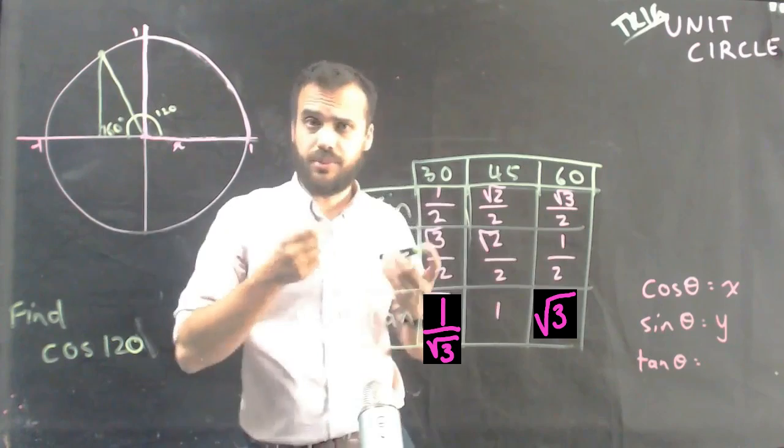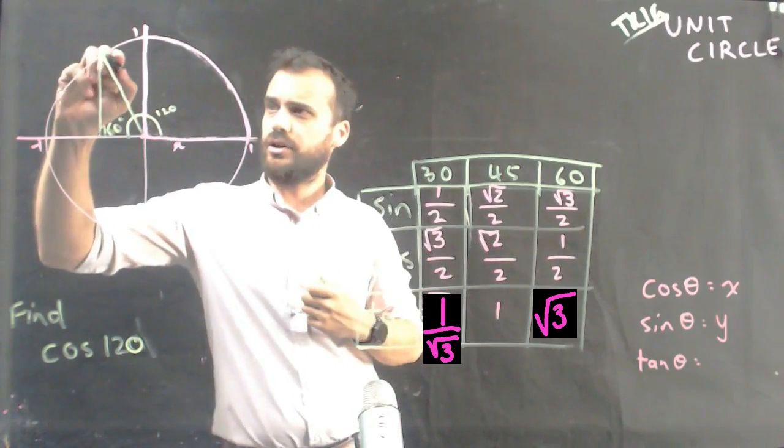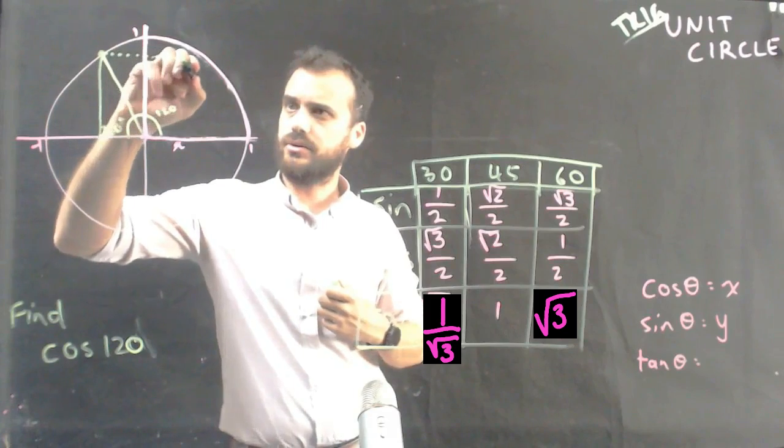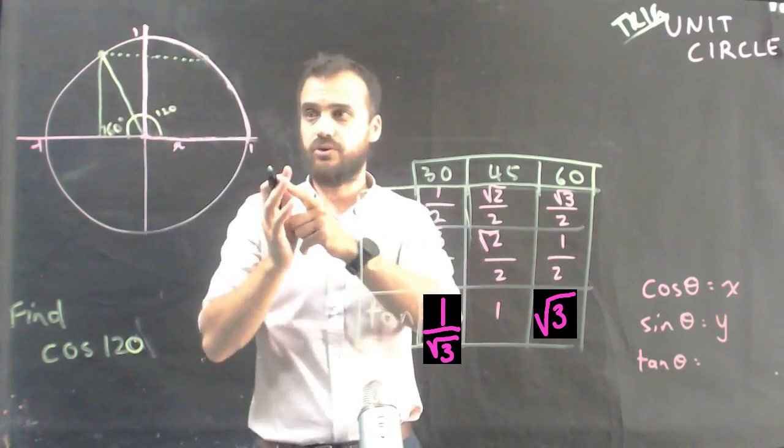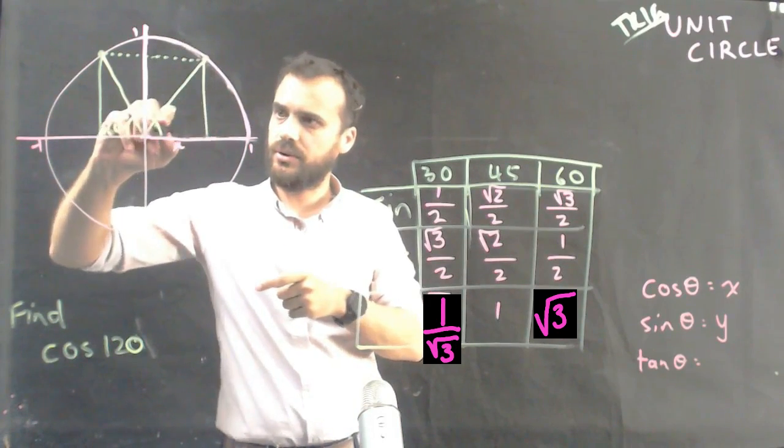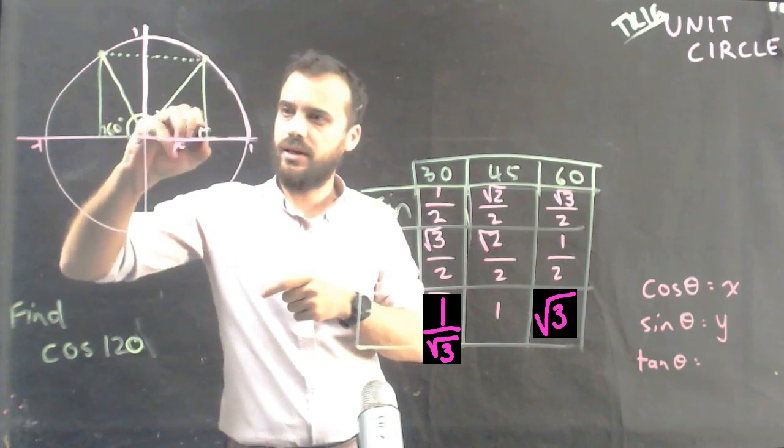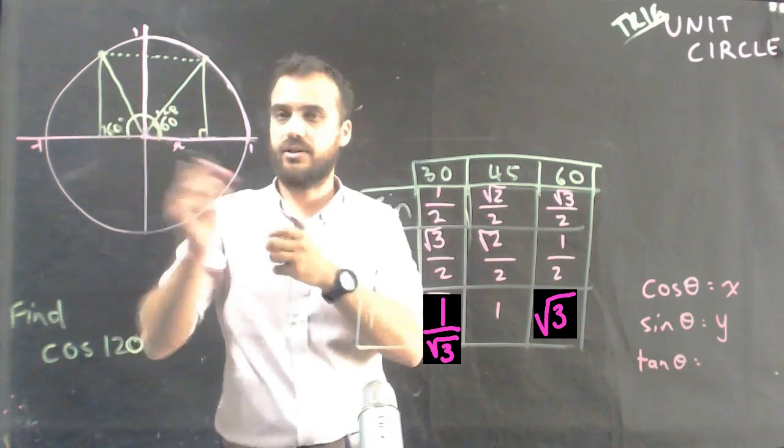Now, where we go to from here depends upon symmetry. If I draw a line along here like this, I'm back into the first quadrant.